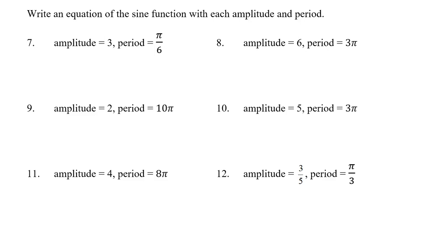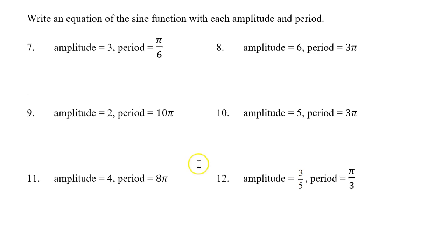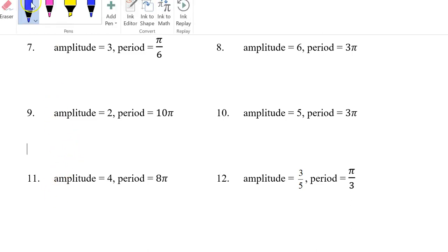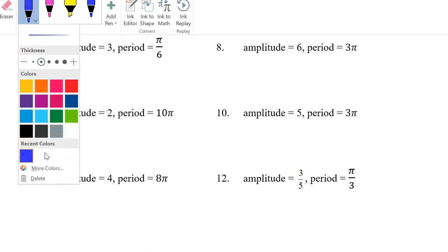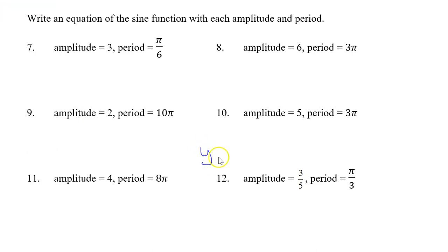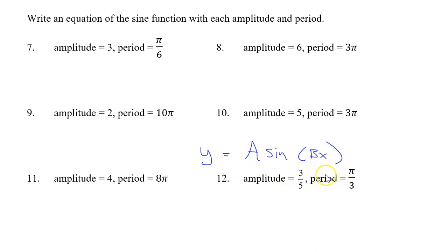In this video, we are going to determine the equation of the sine function based on the amplitude and the period. First of all, consider the general form of a sine function that does not have a phase shift in it. It goes like this: y equals a times the sine of bx. If there's no phase shift, this is what we've got.